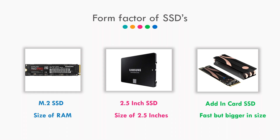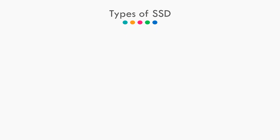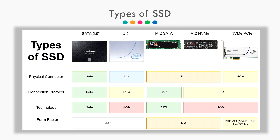Now let's see the types of SSD. There are mainly 5 types: SATA 2.5 SSD, U.2 SSD, SATA M.2 SSD, NVMe M.2 SSD, and NVMe PCIe SSD. Among these, SATA 2.5 and U.2 are in the 2.5 form factor, SATA M.2 and NVMe M.2 are in the M.2 form factor, whereas NVMe PCIe comes in the AIC form factor, that is, add-in card.